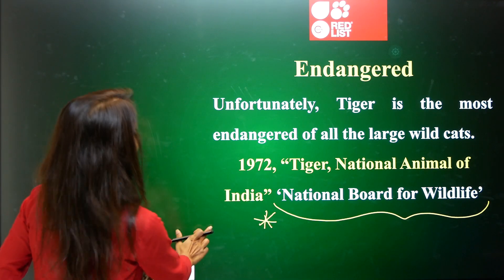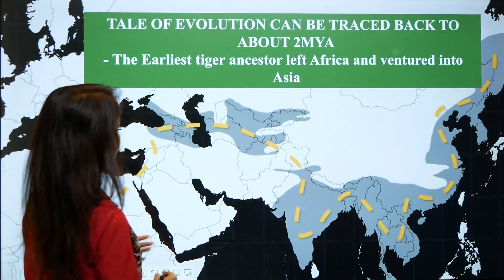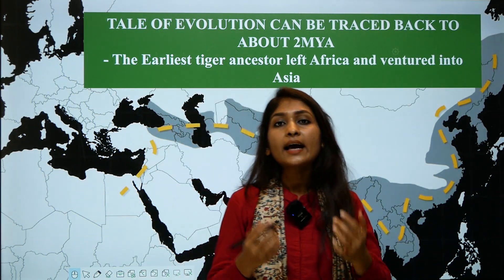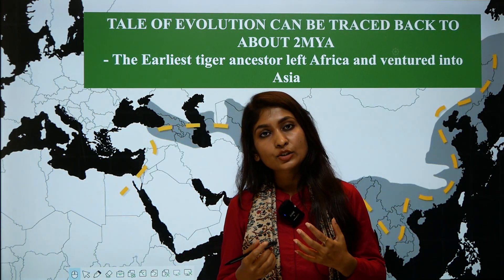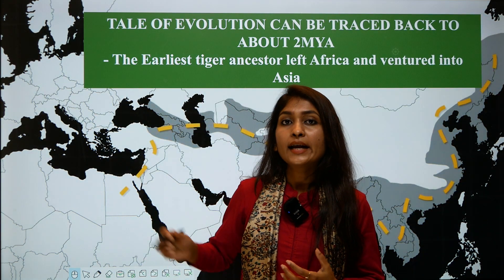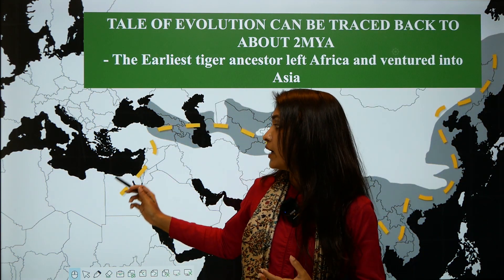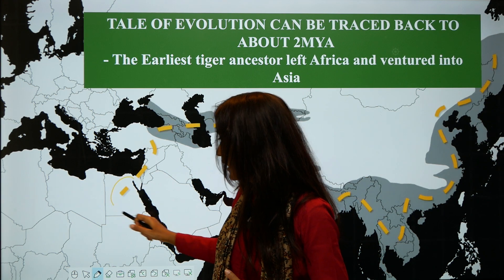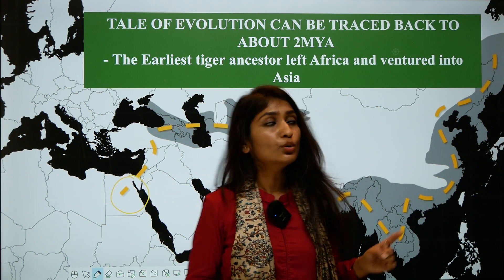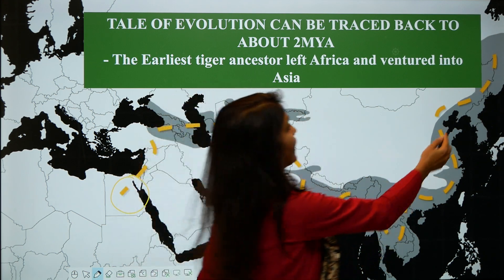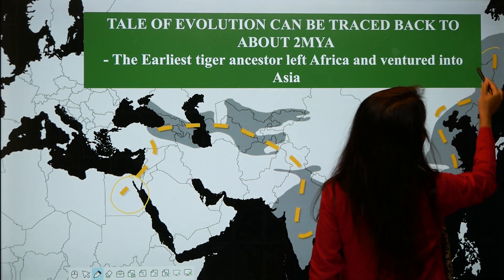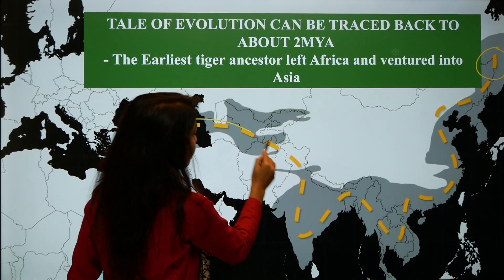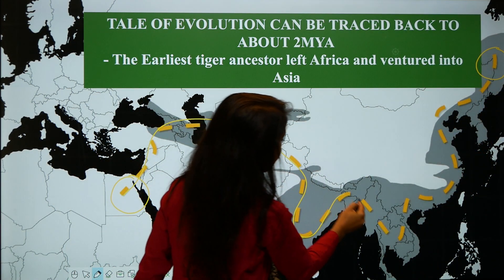We will now move on to understand the history of the tiger. The tiger can be traced back to 2 million years ago. It was found in Africa and ventured into deep Asia — we can find the trace of the tiger moving from Africa to deep Asia.